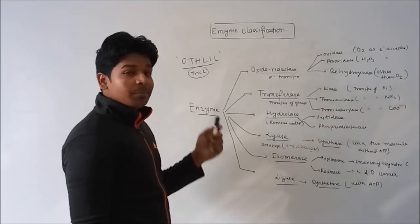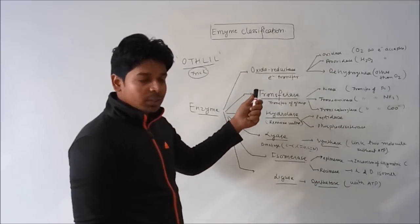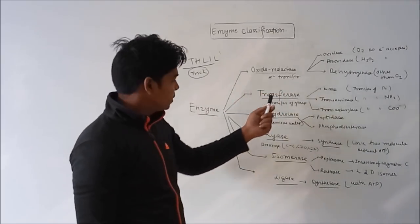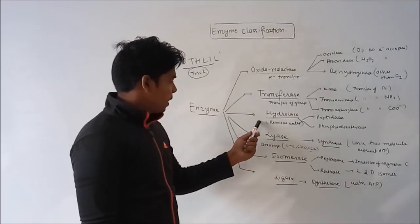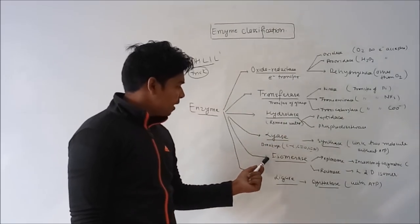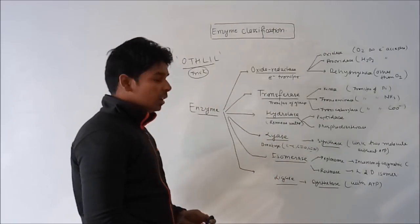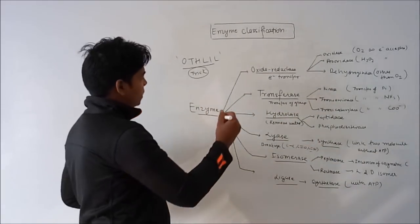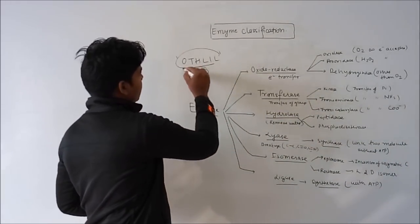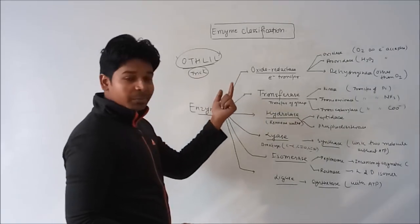Next is enzyme classification. Enzyme can be classified into six groups: oxidoreductase, transferase, hydrolase, lyase, isomerase, and ligase. You can learn the sequence of this classification, that is OTHILI.